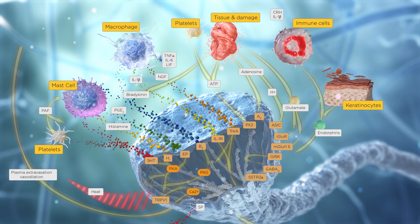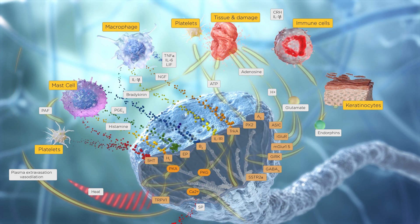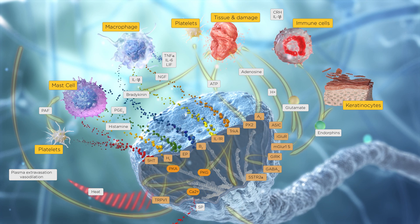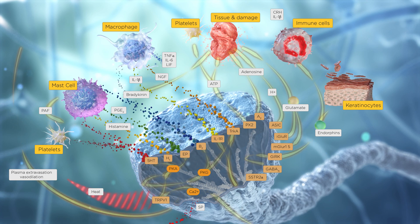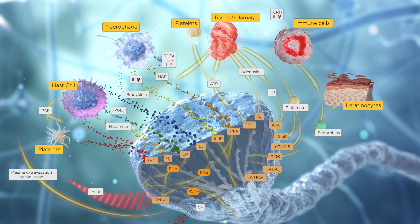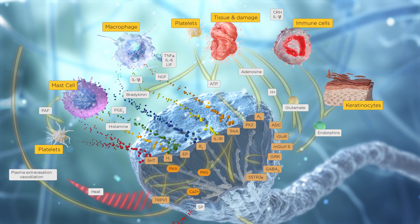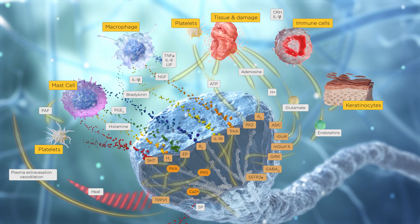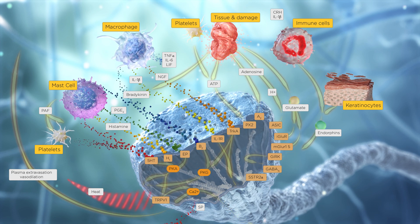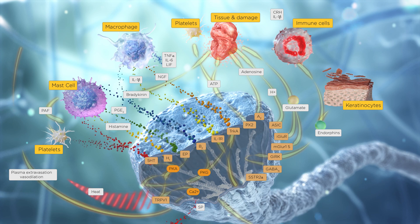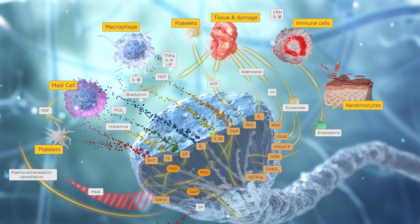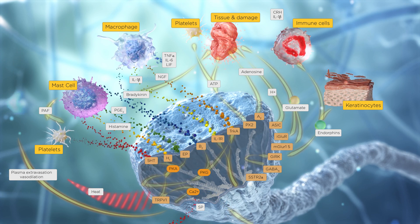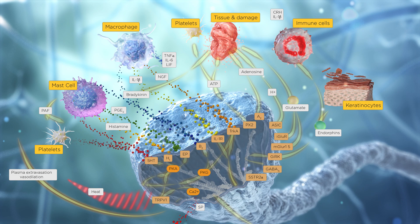Bradykinin may play a critical role in inflammatory pain and hyperalgesia, by acting directly on sensory nerves and by indirectly evoking the release of other inflammatory mediators from non-neuronal cells. Serotonin can intensify pain induced by bradykinin and enhance the response of nociceptors to bradykinin.